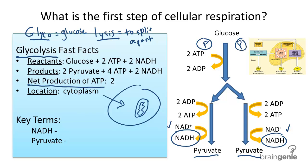So, to summarize, try to write the reactants and the products of cellular respiration, and draw a diagram of the cell to illustrate where this takes place. Good luck!